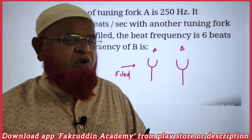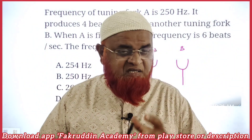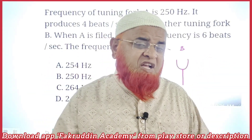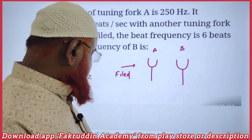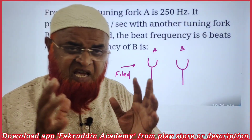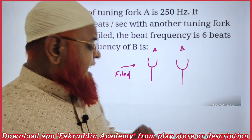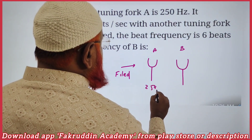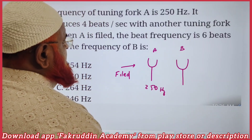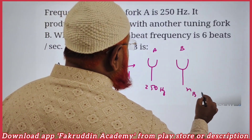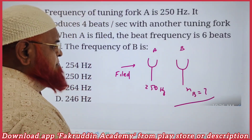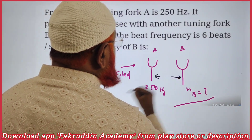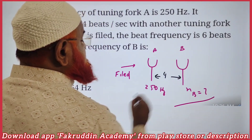My dear students, this is a problem on beats. I am going to explain this problem by using the finger technique. Here you can see there are two tuning forks A and B. Tuning fork A has a frequency of 250 Hz, and the frequency of B is unknown. It is said that the gap between them is four beats.